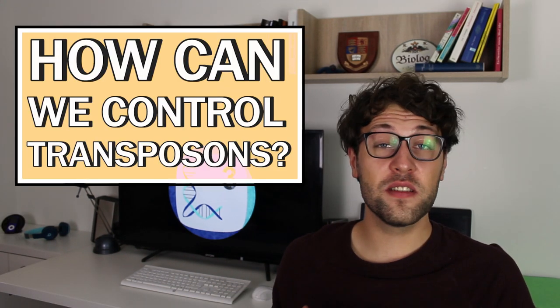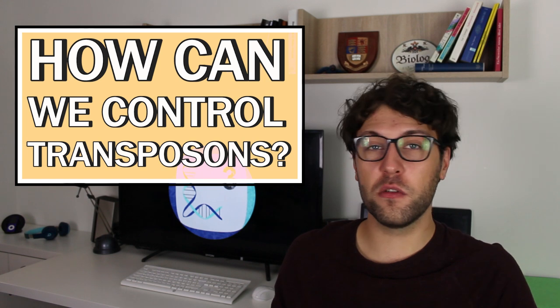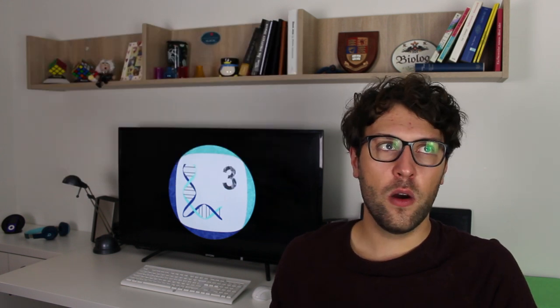You might think if transposons now already form over 50% of our DNA, why aren't they just making more and more copies, meaning that they just take over? Well, there are different answers for that. One of which is that transposons are often very old. For example, two types of Class 1 transposons called L1 lines or Alu sequences have been around for 150 million or 80 million years respectively.